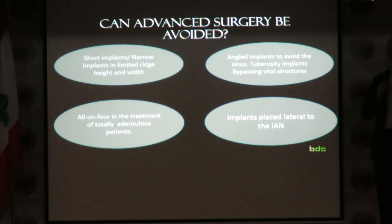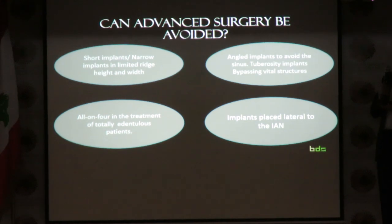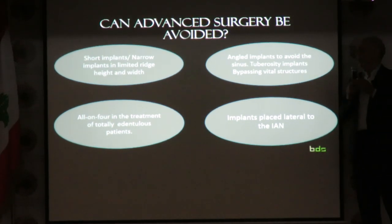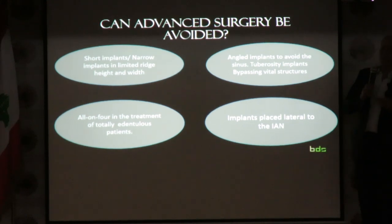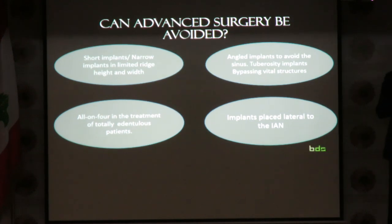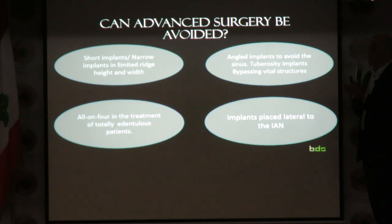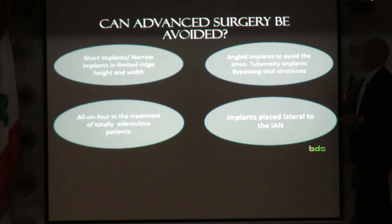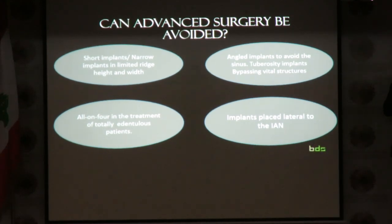And then the implant placed lateral to the nerve. We sometimes have situations where we have no bone coronal to the inferior alveolar nerve — so what do we do? We need to do vertical reconstructions, go to more sophisticated therapies that in most cases carry maybe 10, 20, 30%, and some publications talk about 50% complications. So why do we need to do that if we can do something easier? Simplification here means getting to the result in a simpler way. Placing an implant lateral to the nerve is not easy at all, but it serves the patient — they are rehabilitated within two months.